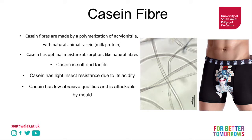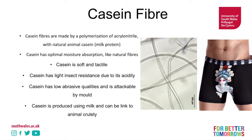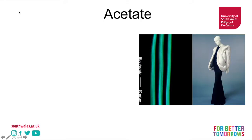Unfortunately casein has low abrasive qualities and is attackable by mold, meaning warm and wet conditions are not ideal. Casein is produced using milk and can be linked to animal cruelty — there are significant animal cruelty issues relating to the dairy industry which can impact its production. However, it can potentially be sustainable given that it can use waste milk — milk that has gone off or cannot be used for human consumption or other purposes.